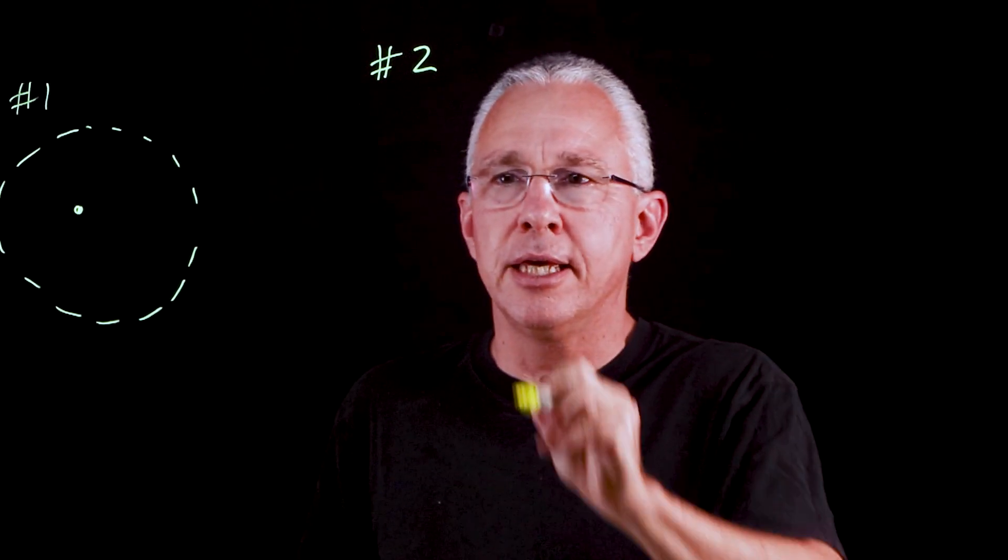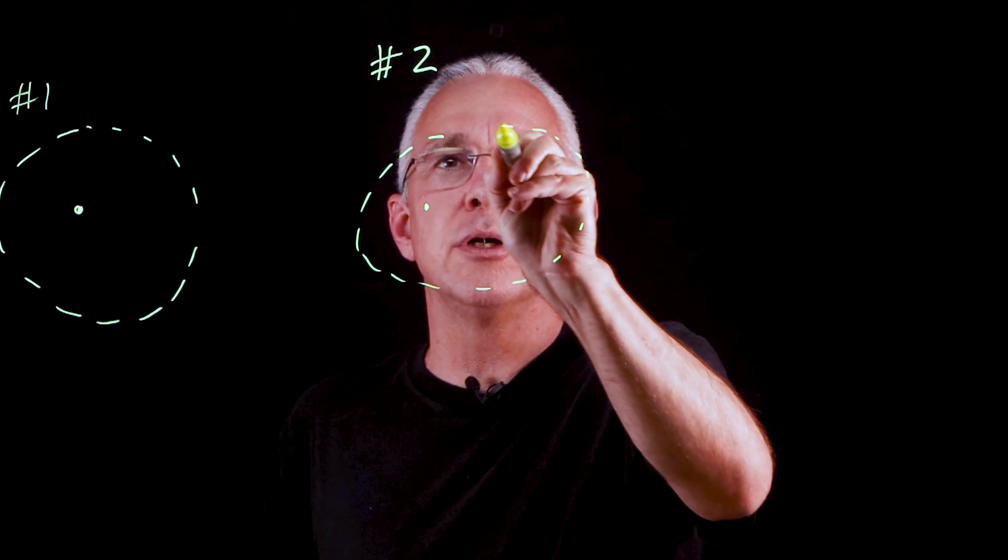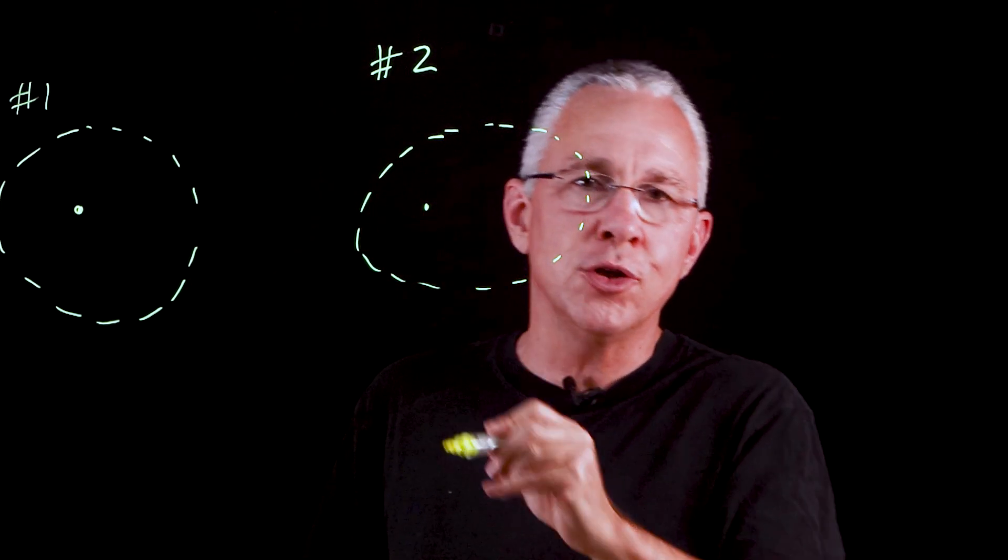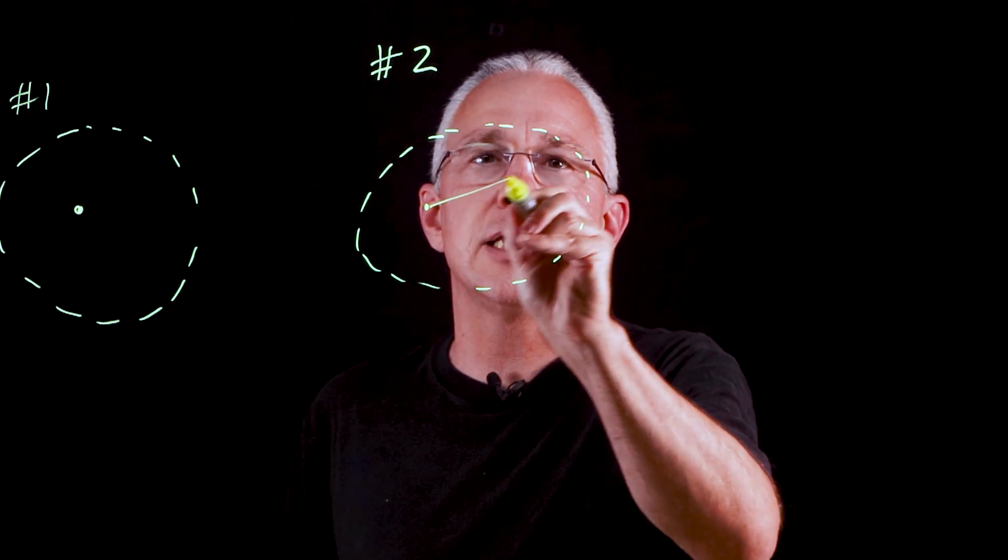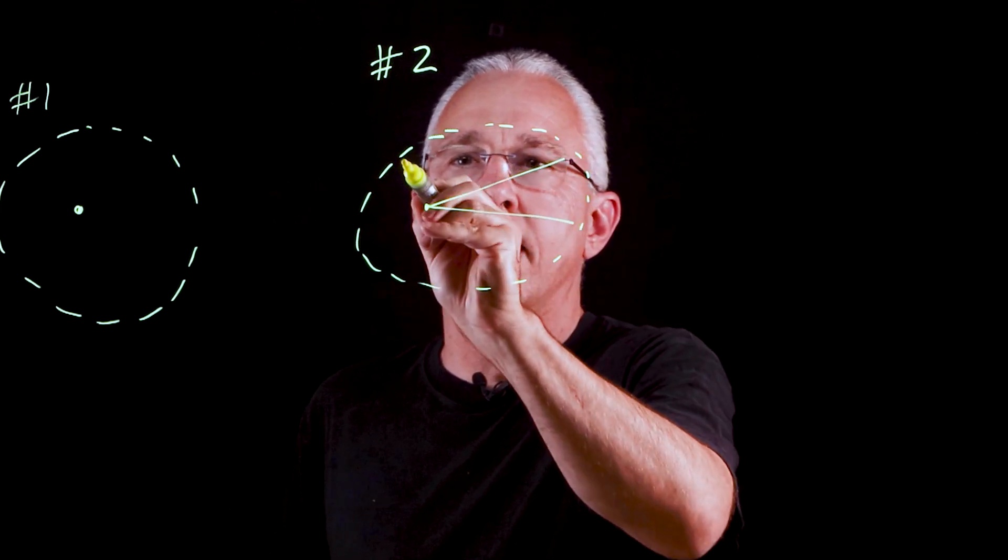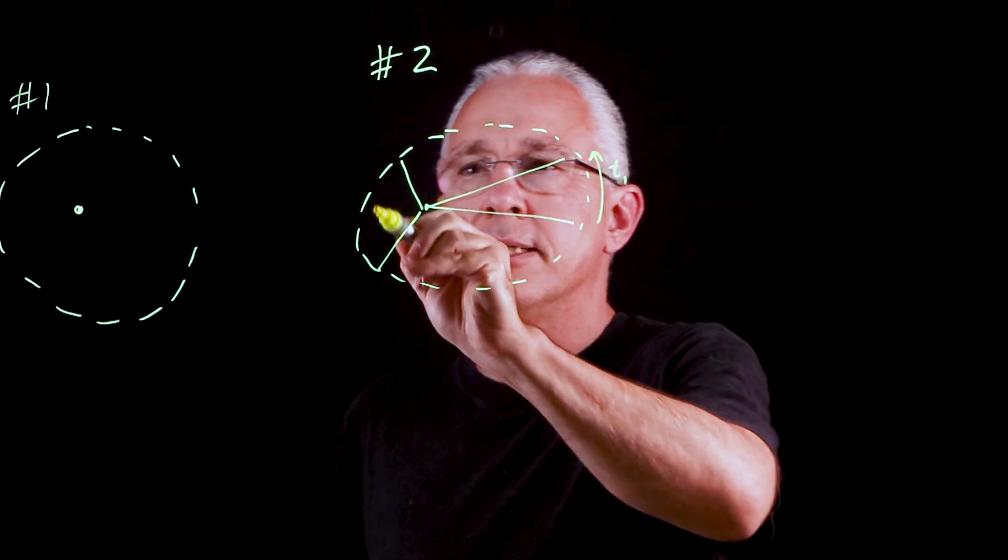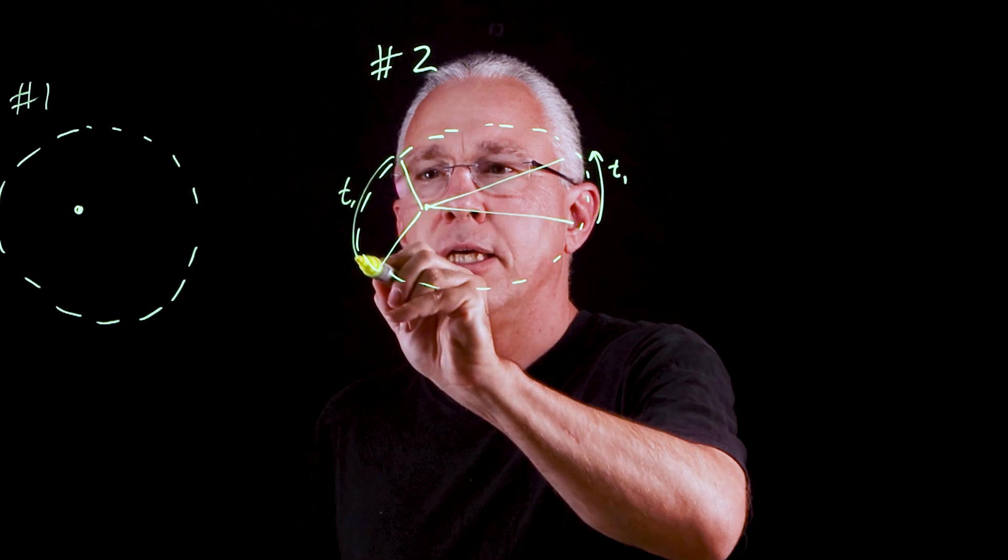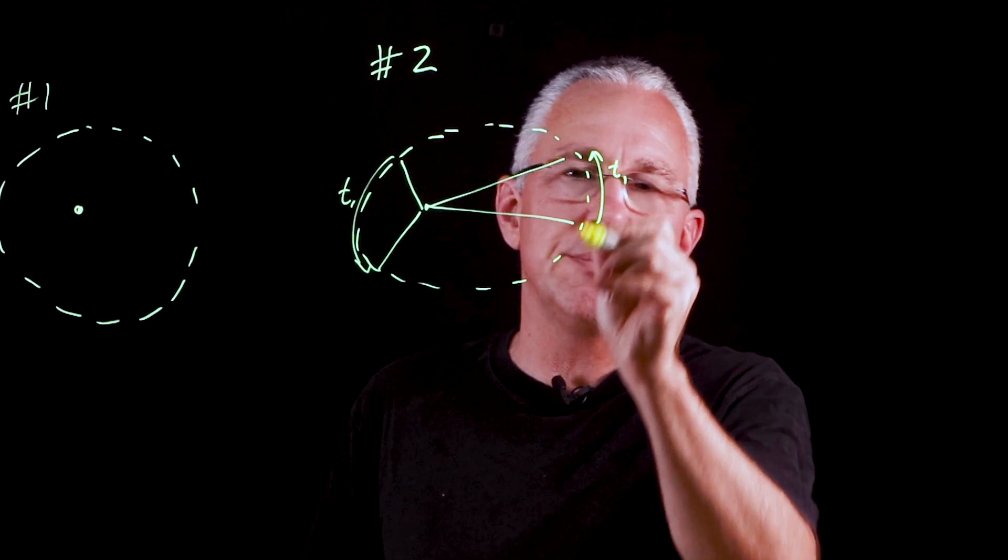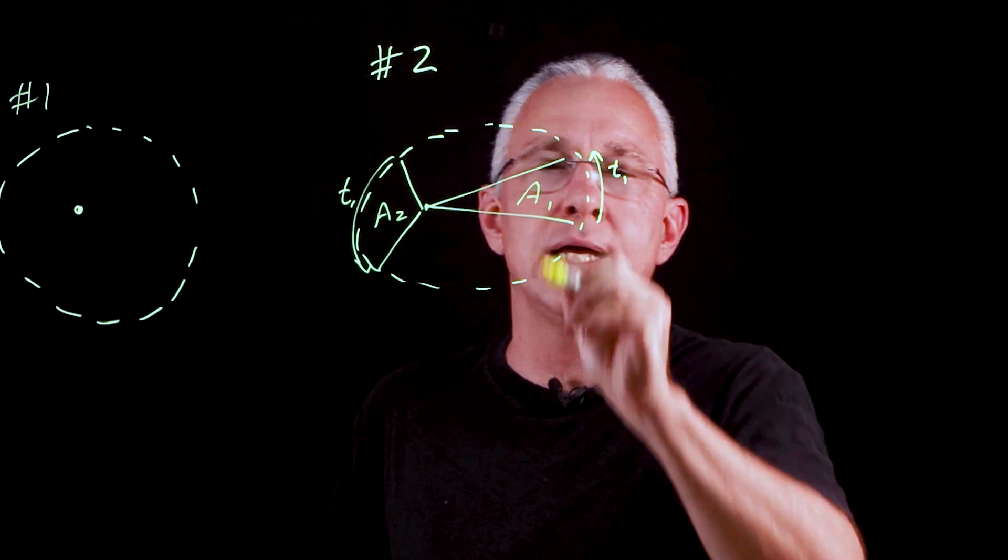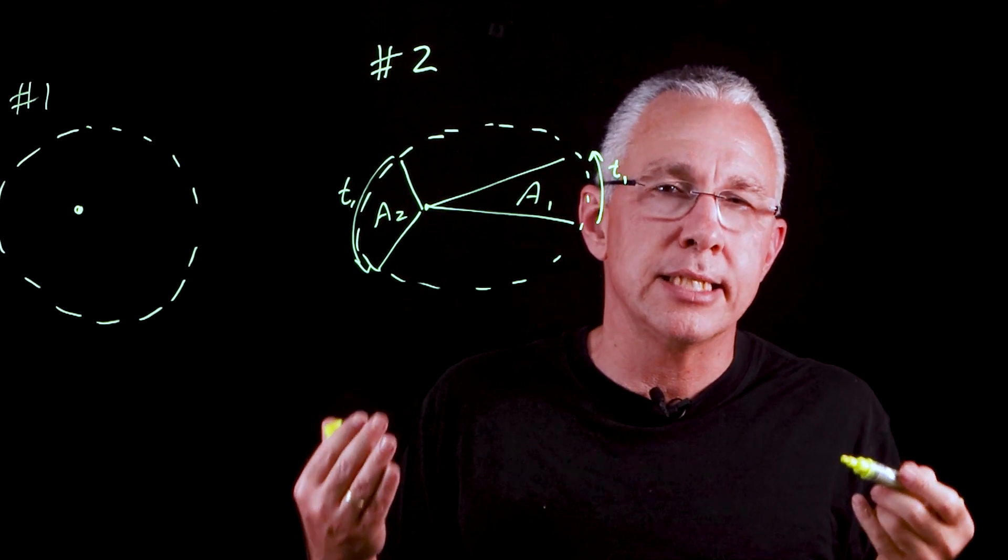The second one is an extension from that. If we have our ellipse and I'll make it a little bit more eccentric like so, then if you draw out two areas such as this and this. He said well if this time over here is the same as this time over here, then the area that the planet sweeps in those two times—area two and area one—well they're exactly the same area.